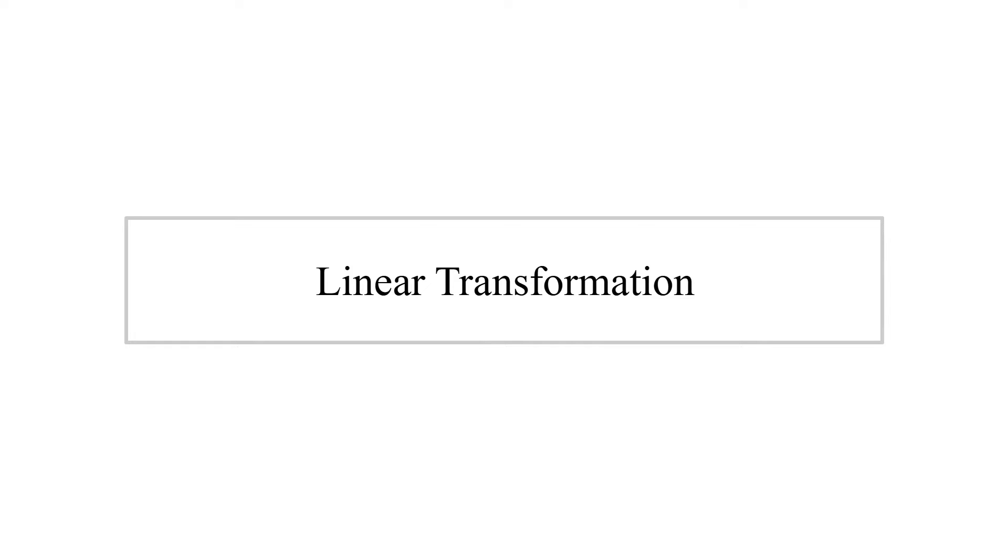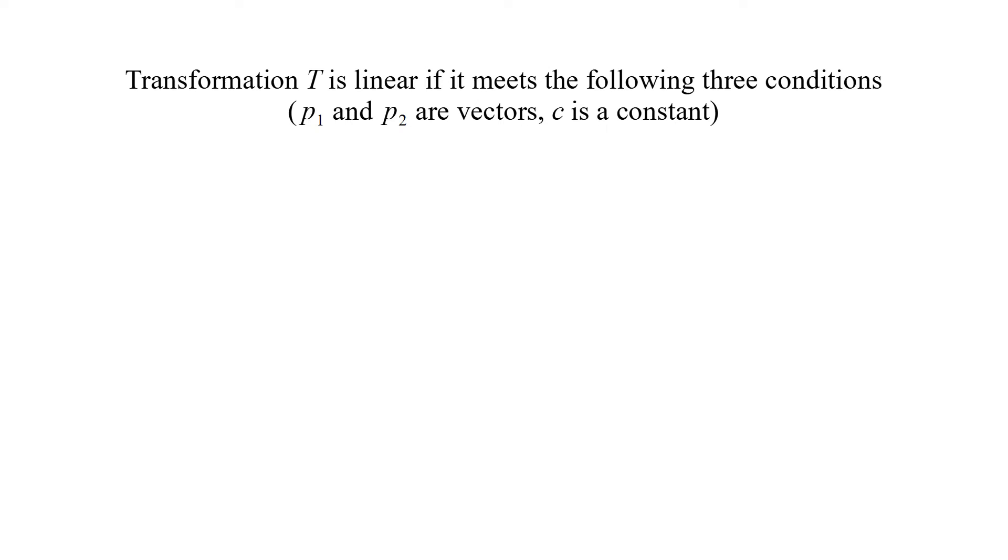Linear transformation. Transformation T is linear if it meets the following three conditions. P1 and P2 are vectors and C is a constant.